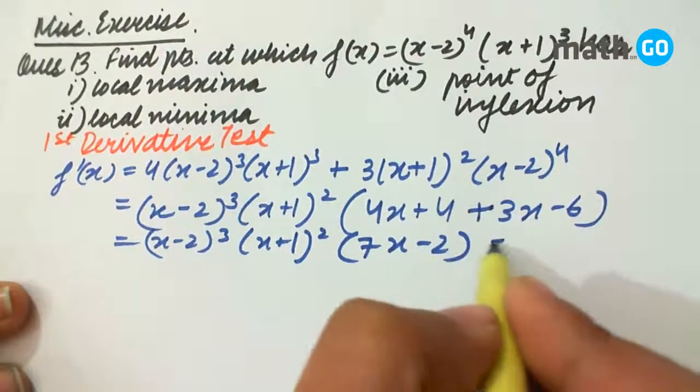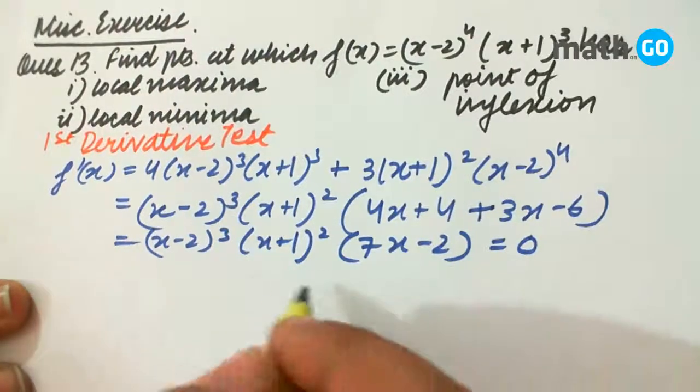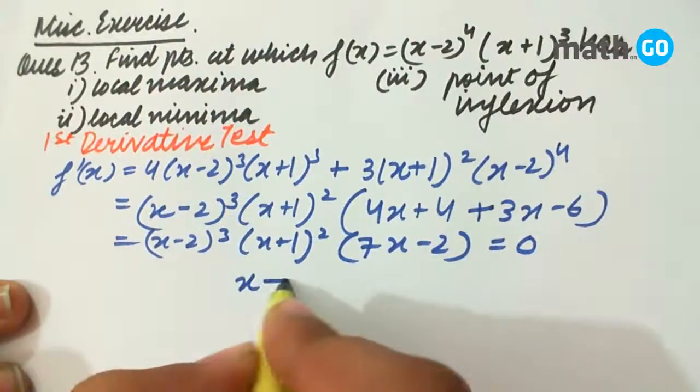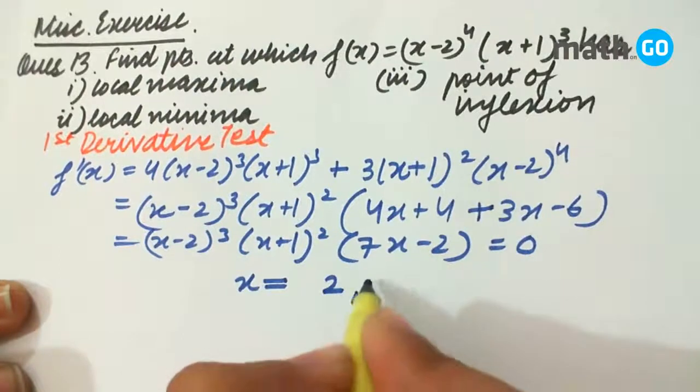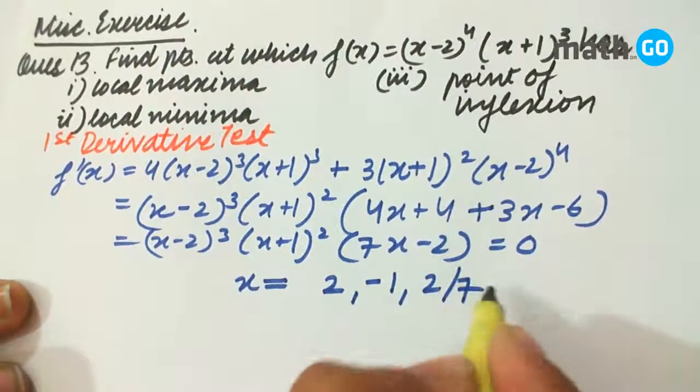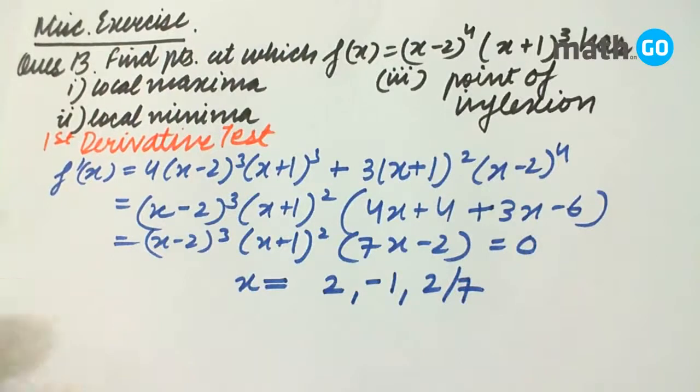Now we keep it equal to 0 for the critical points and we get the critical points as x equals 2, -1, and 2/7. Now comes the major part.